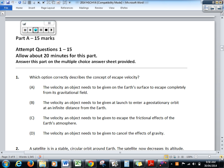We can't get rid of gravity. Gravity does not suddenly magically disappear. If we could, we wouldn't need aircraft. So let's just go through A, B and C. The velocity an object needs to be given on the Earth's surface to escape completely from its gravitational field. B, the velocity an object needs to be given at launch to enter a geostationary orbit at an infinite distance from the Earth. C, the velocity an object needs to be given to escape the frictional effects of the Earth's atmosphere. Now, this is actually quite a bang-free question. If you're awake, you should be able to know this one.